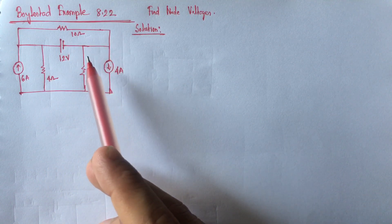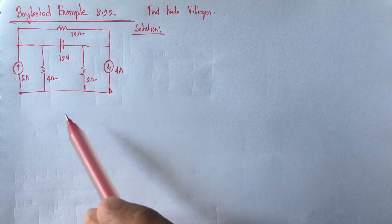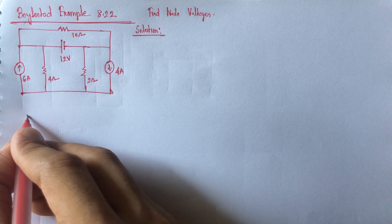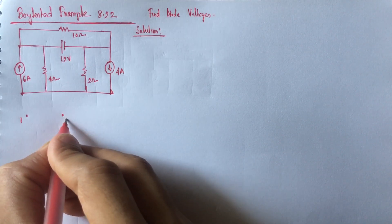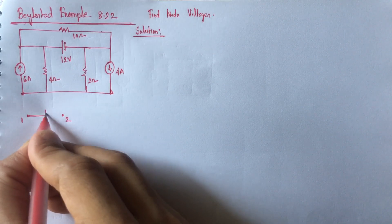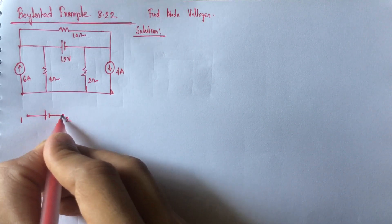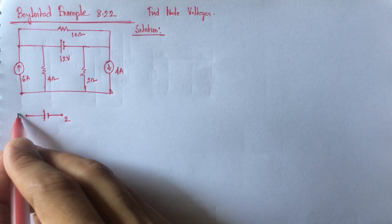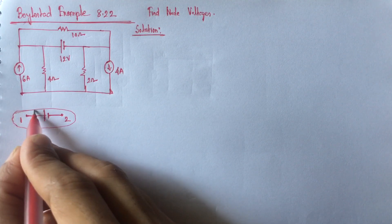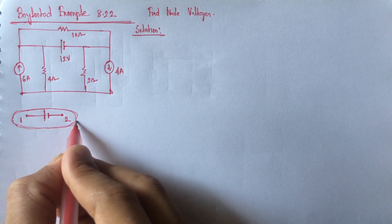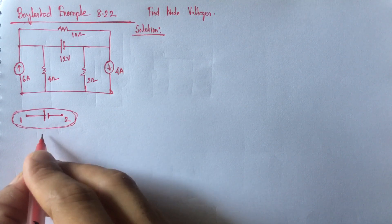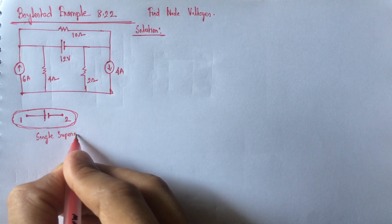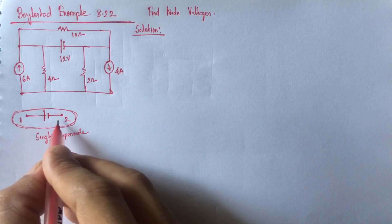For solving this type of problem, at first we have to know what is a super node. Let this be node 1 and this be node 2. If there is a voltage source in between these two nodes, then these two nodes 1 and 2 together are called a super node. So, this is a single super node which is comprised of node 1 and node 2.